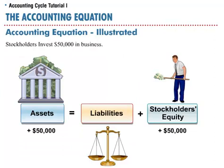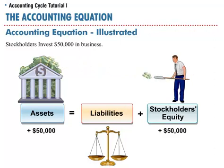The stockholders of Campus Pizza invested $50,000 of cash into the company. The company's assets would increase by $50,000 due to the value of the cash, and stockholders' equity would also increase by $50,000. The equation would stay in balance.